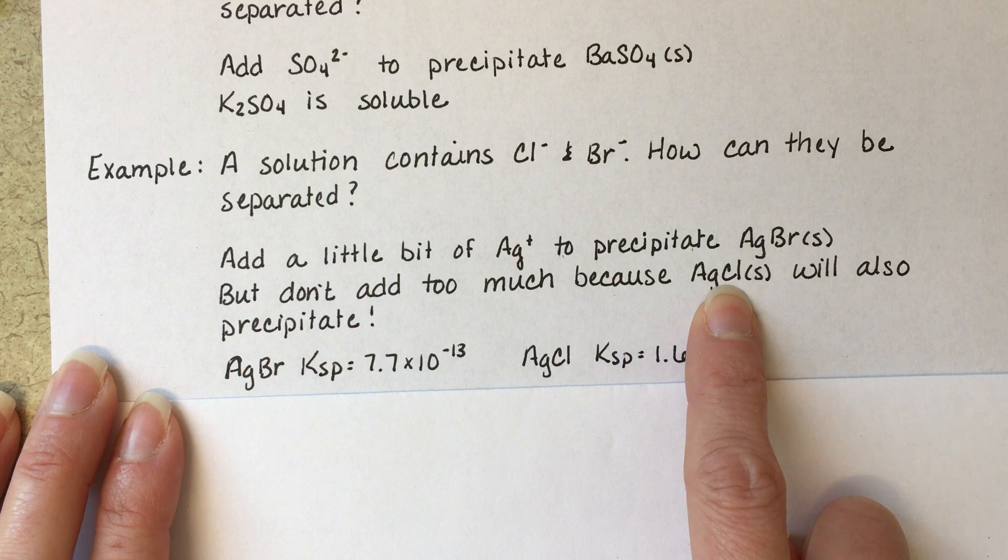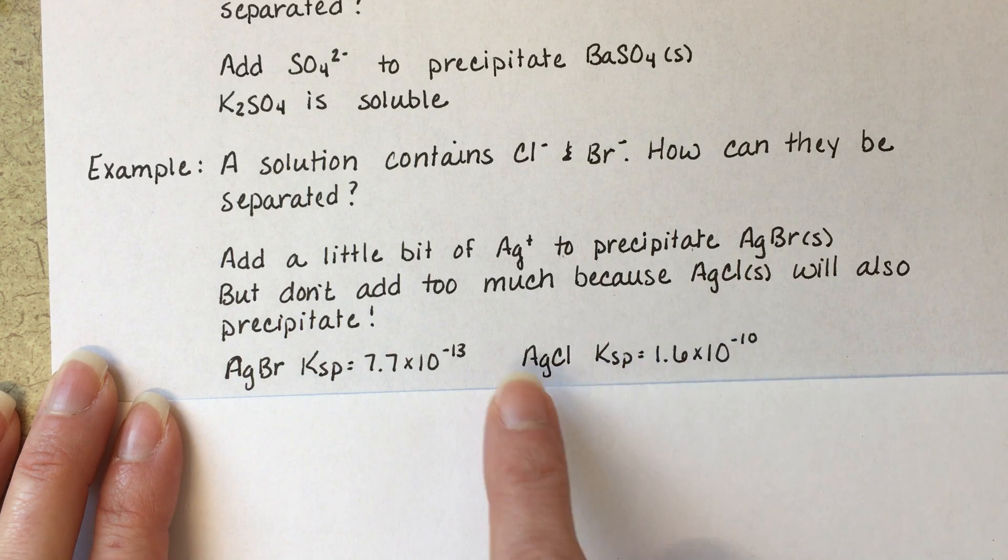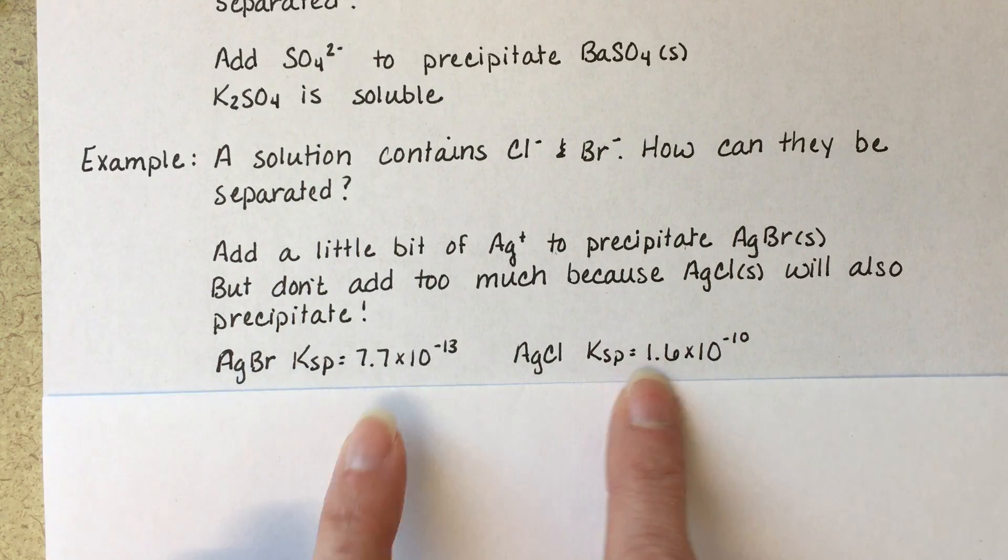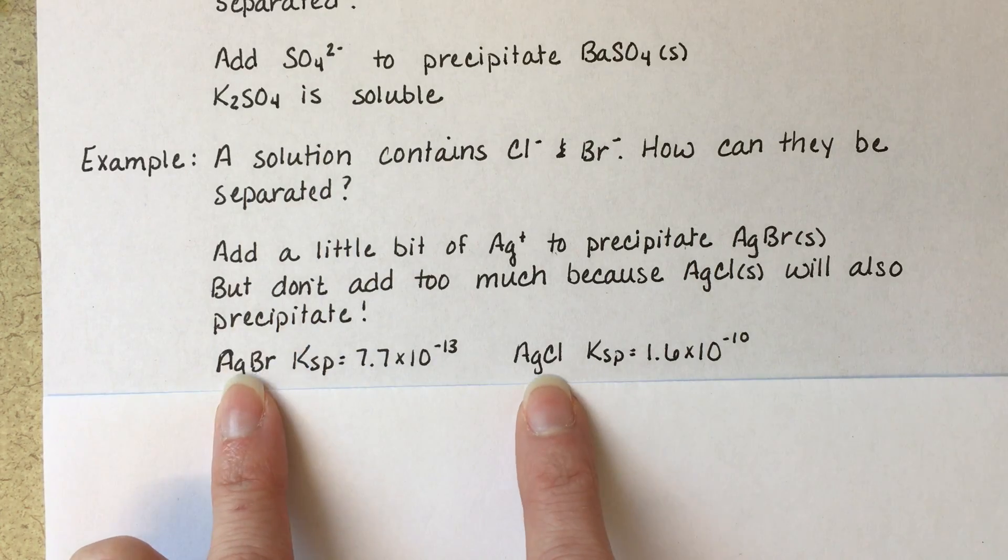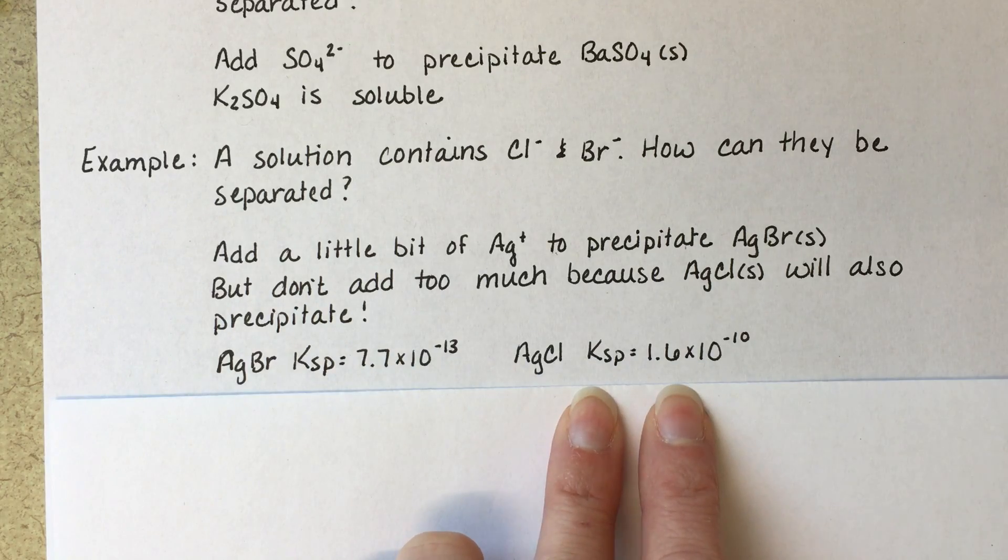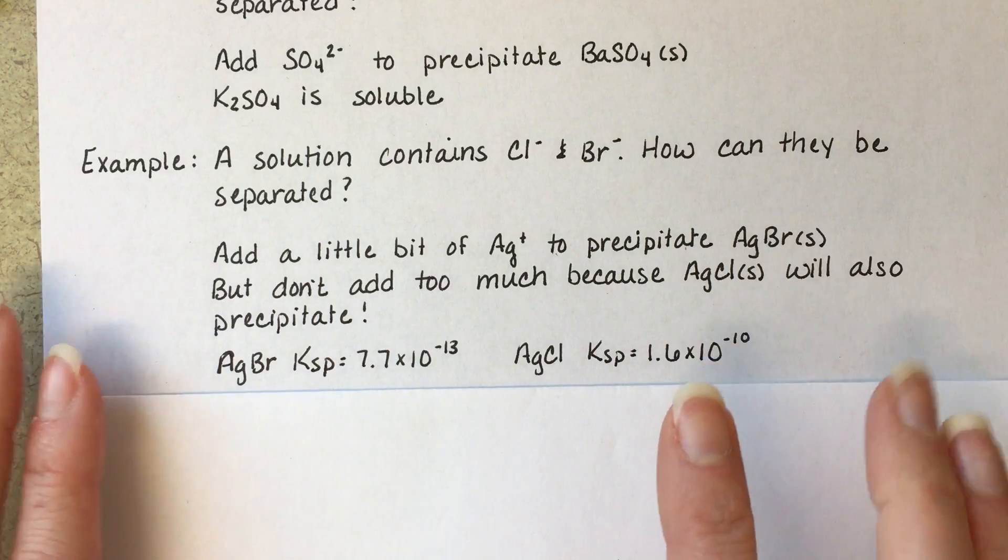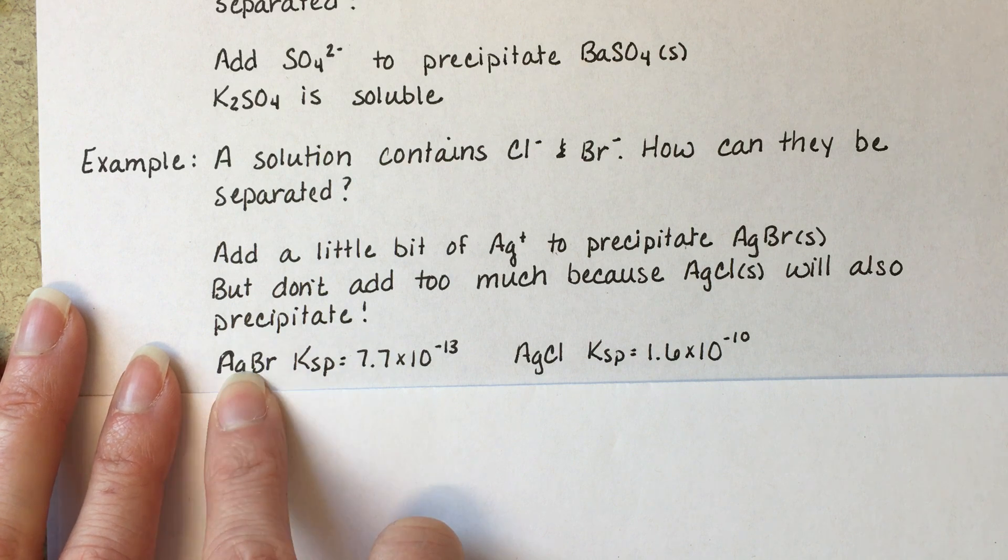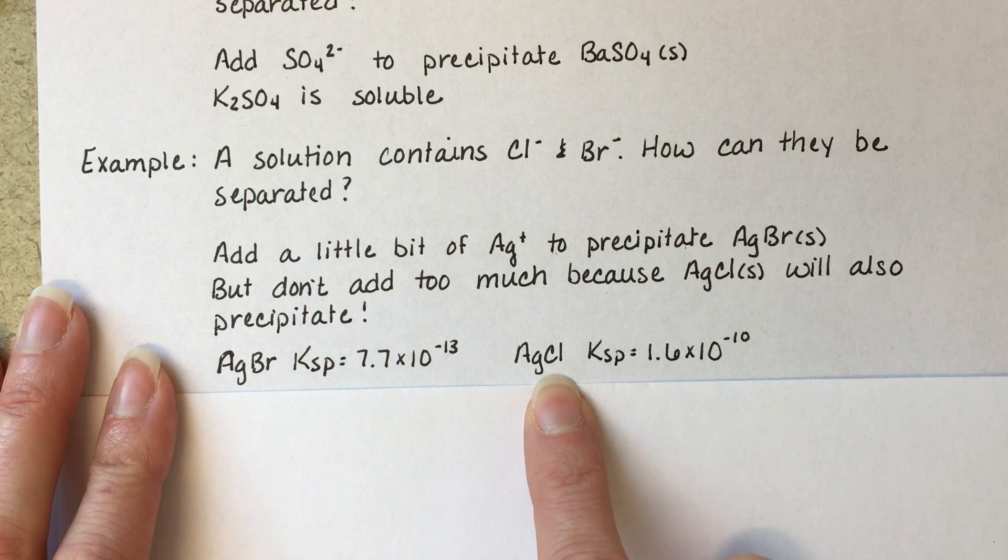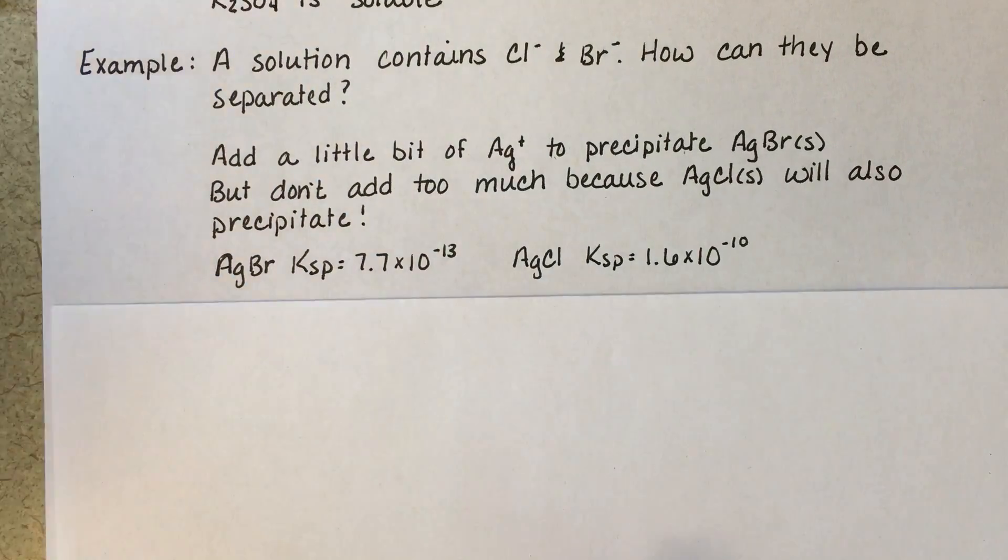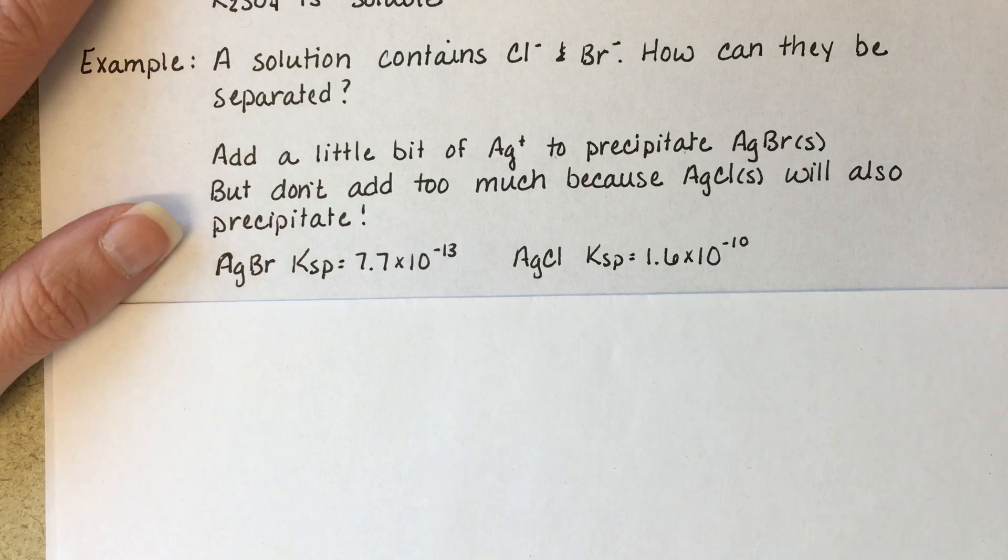We just want to make sure we don't add too much. If we add too much silver, then we're going to precipitate out silver chloride as well. So what we're doing here is taking advantage of the fact that these two compounds have different KSP values. They will precipitate out of solution at different times. This one will come out first, this one will come out second. We're going to try to find that sweet spot, adding exactly enough silver to get silver bromide to come out, but not enough silver to precipitate out AgCl. So we're going to have to do some math to figure out what that magic number is of silver.